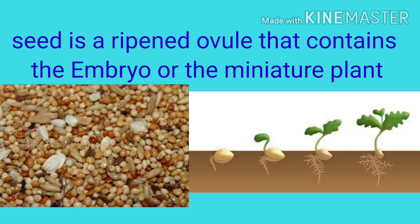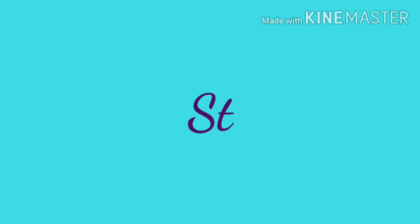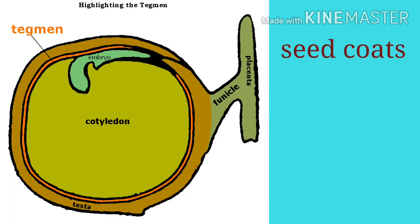A seed is a ripened ovule that contains the embryo, or the miniature plant. Seeds of different plants vary in their size and shape; however, the general structural organization of a seed remains almost the same. Every seed has outer coverings called seed coats, which develop from the integuments of the ovule.